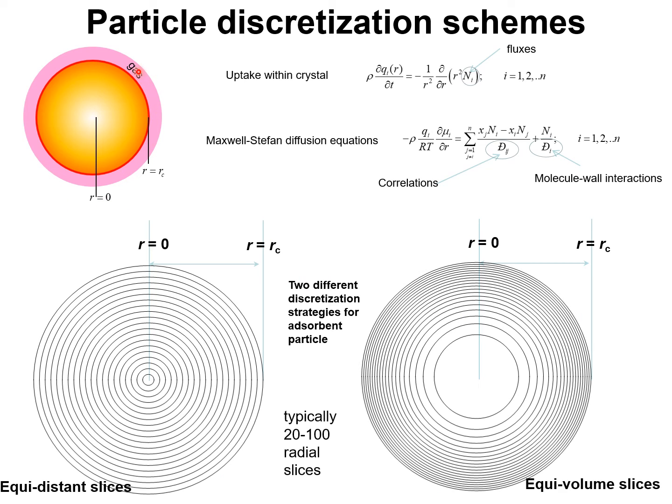Consider the transient uptake of the gaseous component into the crystallites at position Z in the fixed bed adsorber. The transient uptake of each of the components is described by this partial differential equation where Q_i represents the molar loading at the radial position R and N_i is the flux of component i. The flux of each of these components is related to the gradients of the chemical potential by the Maxwell-Stefan diffusion equations.